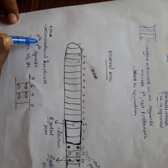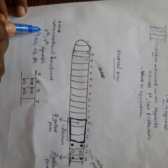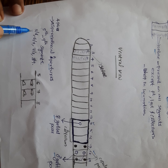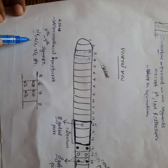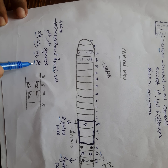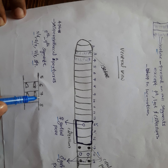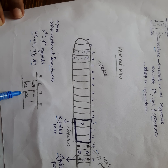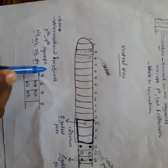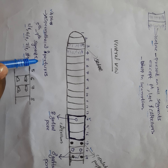Another structure is the spermathecal aperture. You can see spermathecal apertures between segments 5th to 9th: one pair between 5 and 6, another pair between 6 and 7, a third pair between 7 and 8, and a fourth pair between 8 and 9. So there are four pairs of spermathecal apertures in total. We will discuss their functions later.